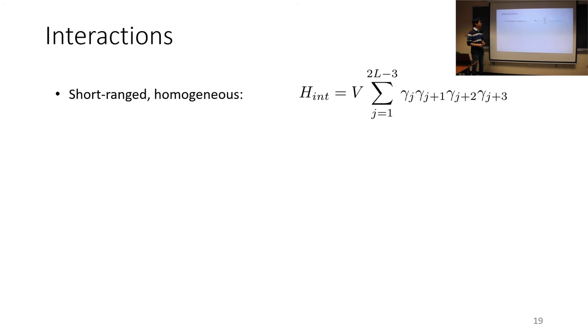So now that's the story with disorder. What happens with interactions and what kind of interactions are we going to include? We include short range homogeneous interactions between Majoranas and the corresponding terms are shown on the far right. We want these interactions to appear throughout the entire protocol and so we include them in the Floquet operator as follows in the first half cycle and the second half cycle.